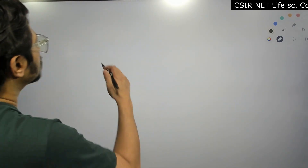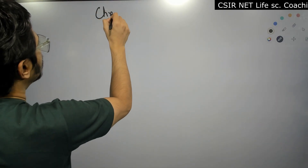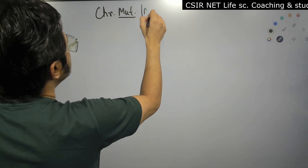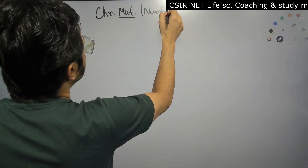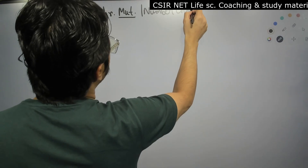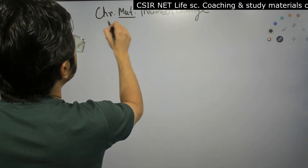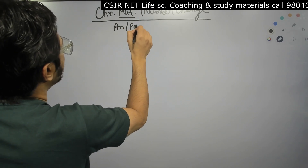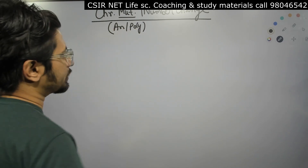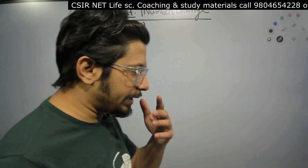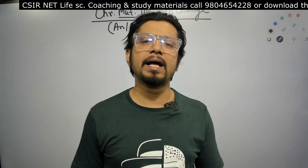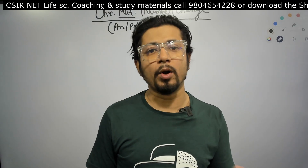Today we are going to talk about chromosomal mutation — basically the number change. So aneuploidy and polyploidy is our topic of discussion. There are different names and nomenclature used in terms of numerical aberrations in the chromosome, and these numerical aberrations can lead to aneuploid and polyploid conditions.